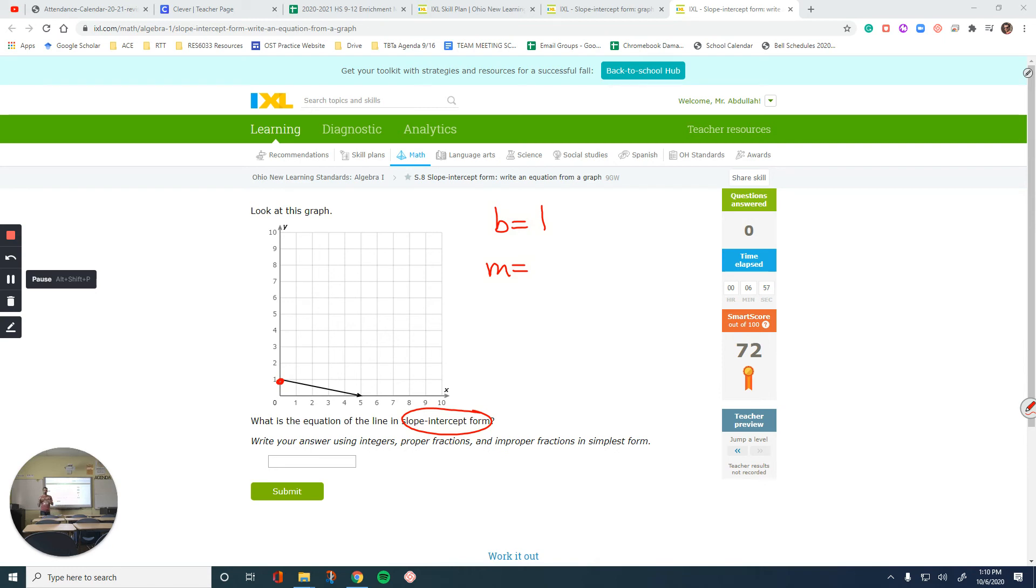And then the slope. Find another point on the line and see how many units you're going up, right, left, or down. The other point on the line is right here. And to get to that point from here, all I do is going down one, two, three, four, five left. Down one, left five. Write them down. When you do these questions on your own, it's always better if you just write it down.